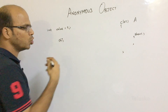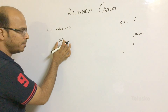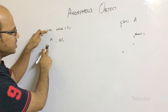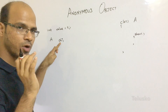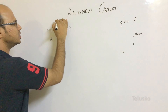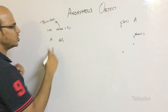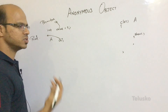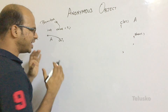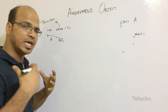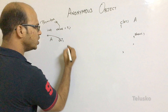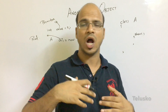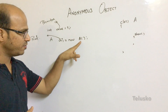The reference variable 'obj' is of type A — just as int is the data type for a primitive, A is the data type for the object. So 'int value = 5' is a primitive variable, and 'A obj' is a referenced variable. But just having 'obj' doesn't let us call 'show' — we need an actual object. To create one, we write: A obj = new A(). That constructor call creates the object.